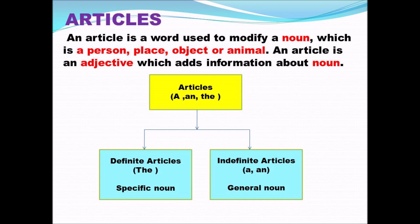There are two types of articles: definite article and indefinite article. The words a, an, and the come under articles. This is divided into two types — definite article and indefinite article. You all must be clear about indefinite articles because we have learnt them in the last class.